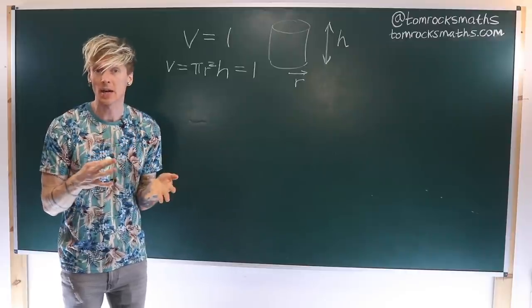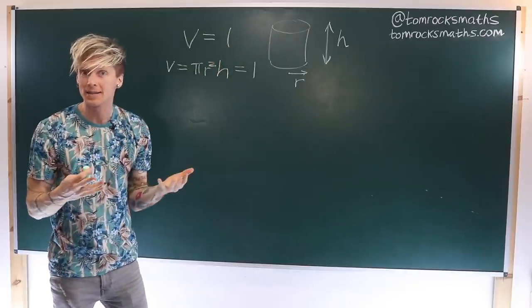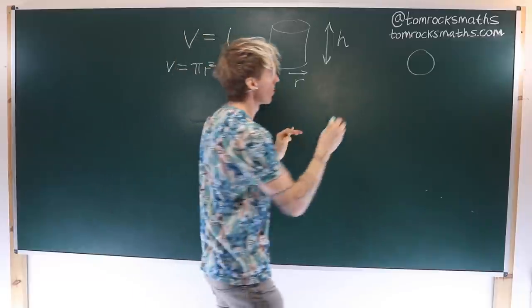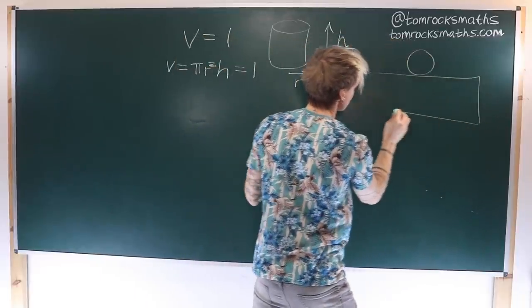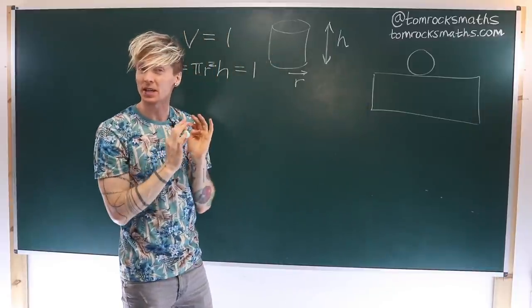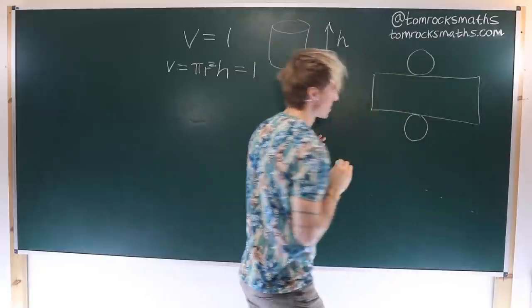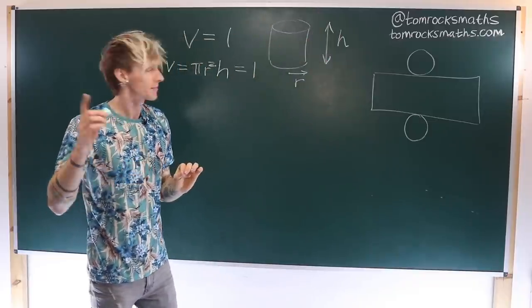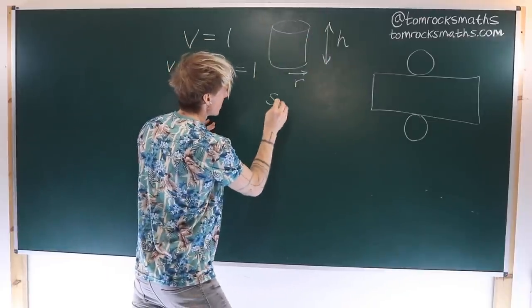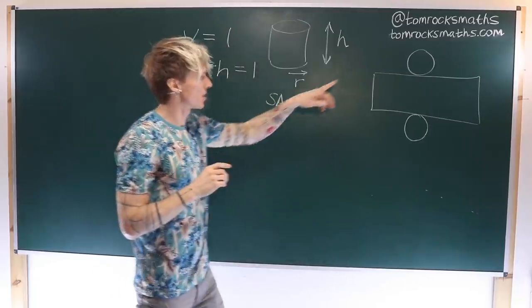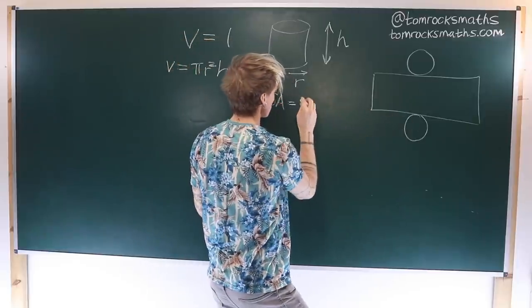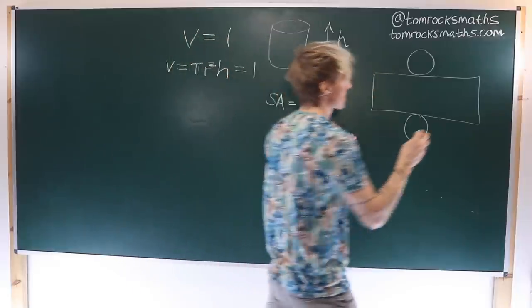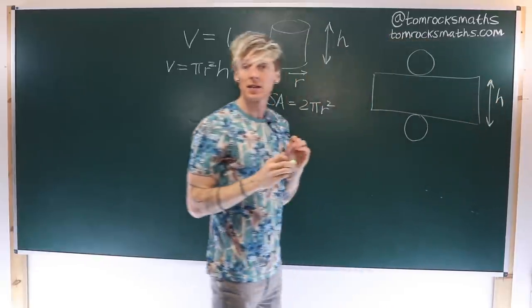To calculate the surface area of a cylinder, imagine unraveling it to create a net. What we're going to find is a circle on the top for this top face, we'll then have a large rectangle which rolls up to give the curved face, and we'll have another circle on the bottom. So the area of this net is equal to the surface area of our cylinder.